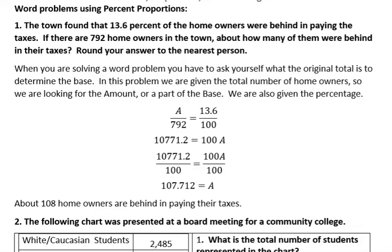In this problem, it says the town found that 13.6 percent of the homeowners were behind in paying their taxes. If there are 792 homeowners in the town, about how many of them were behind in their taxes? Round your answer to the nearest person. When solving a word problem, ask yourself what's the original total — that's going to be your base. The total number of homeowners, 792, is our base. The percent given is 13.6 — remember, don't alter it because we're putting it over 100 anyway.